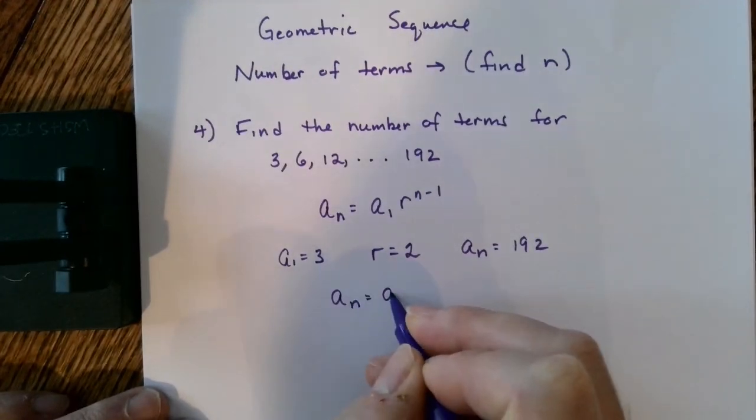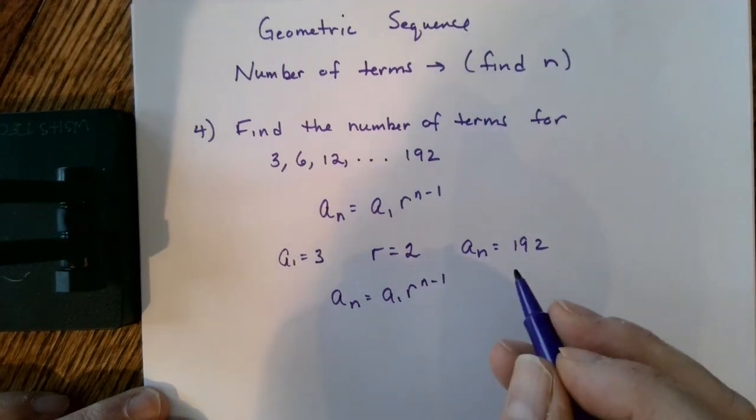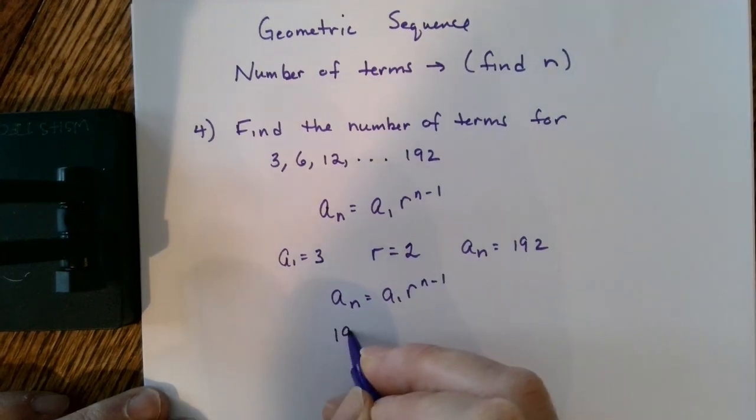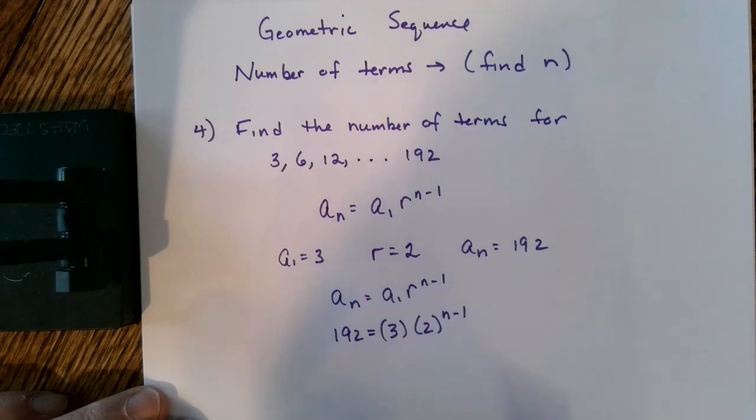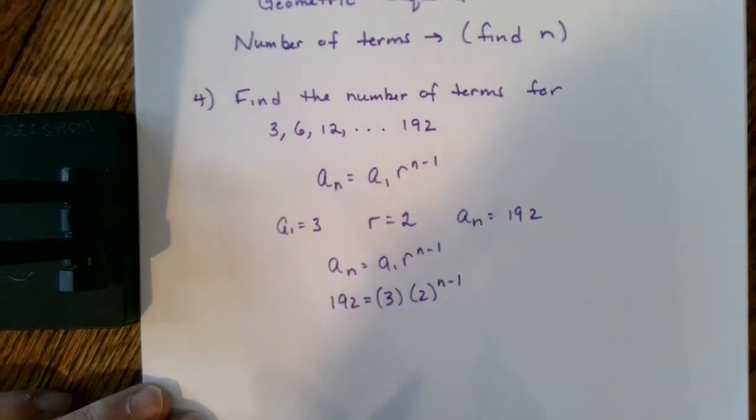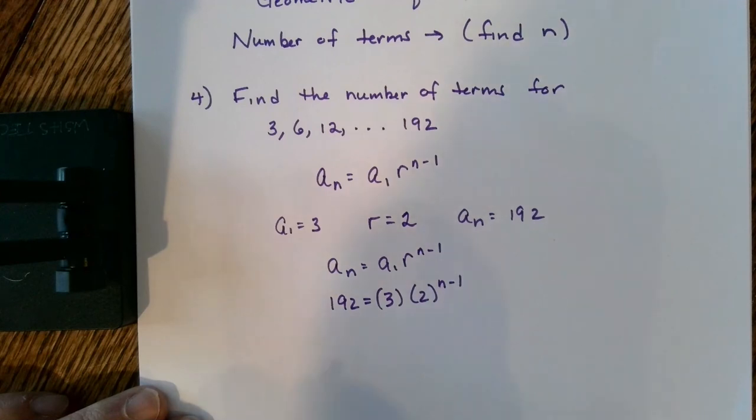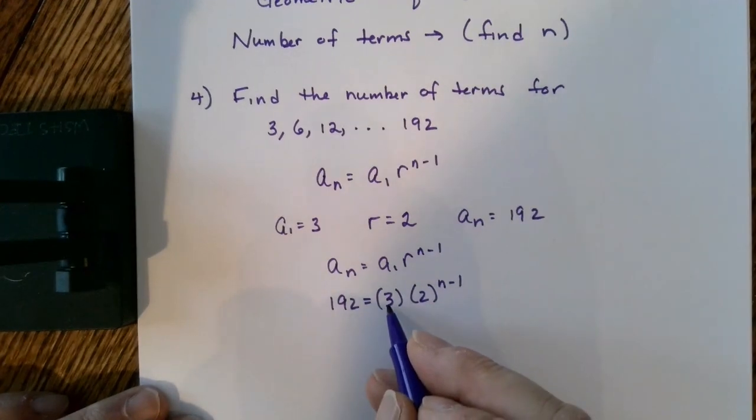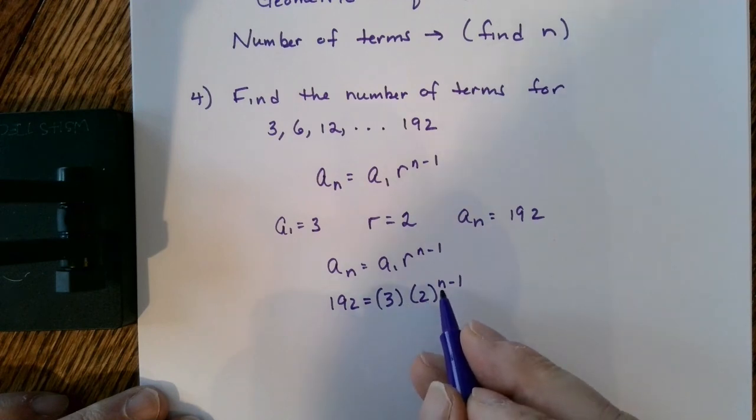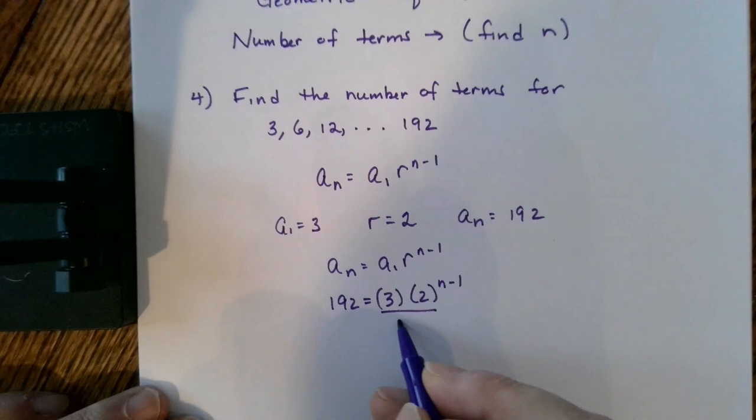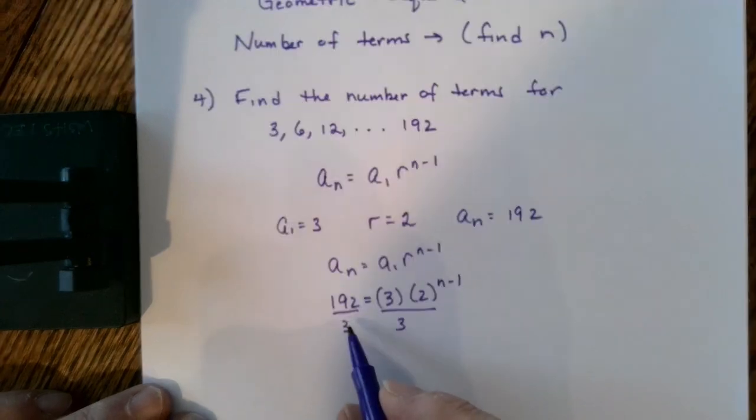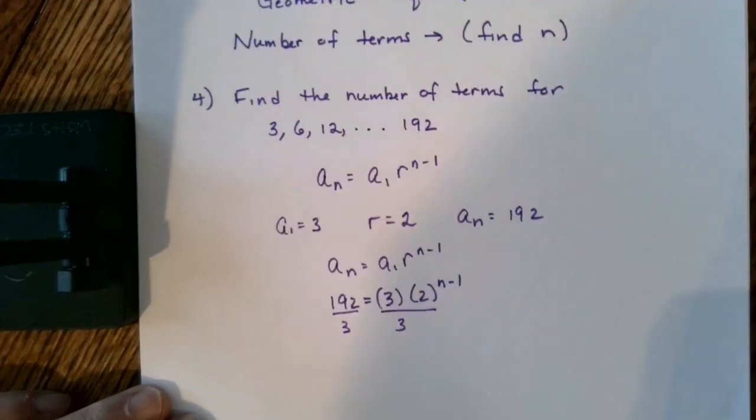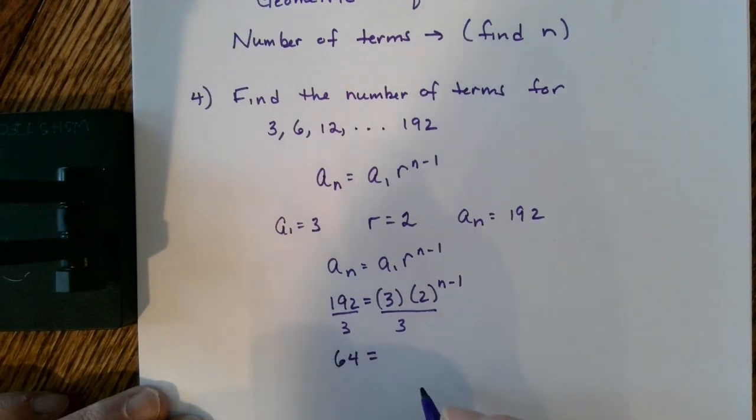I can now go using my formula to simply substitute in. a sub n equaling the first term times r to the n minus 1. I'm going to end up with 192 equals the first term, which is 3, times r, which is 2, to the n minus 1 power. Again, it's just plugging in values and working through the formula. But once again, don't make the mistake of multiplying the 3 and the 2 together. This 2 is raised to the n minus 1 power. So instead, I'm going to divide by 3. 192 divided by 3 is 64. What's left on my right side of my equation is 2 to the n minus 1 power.